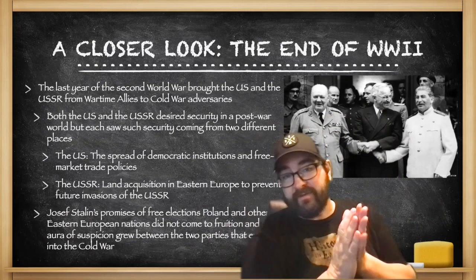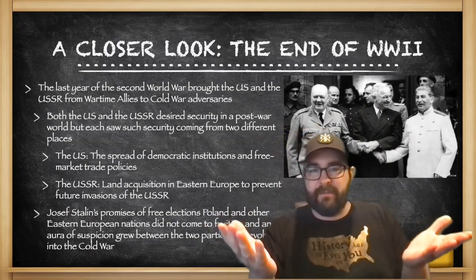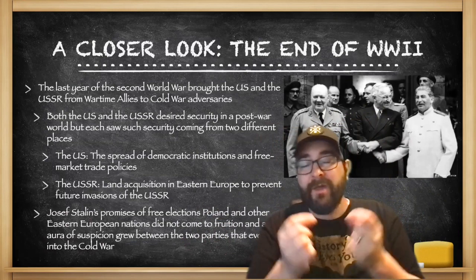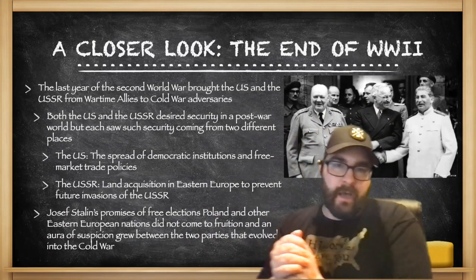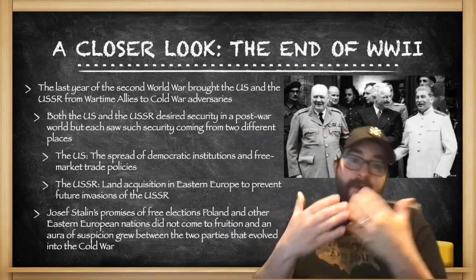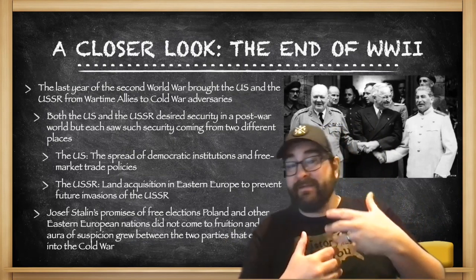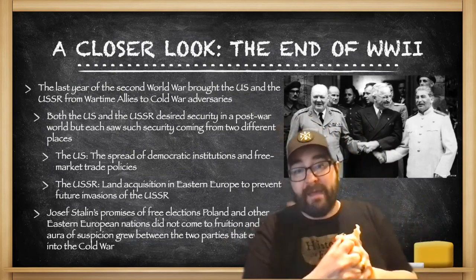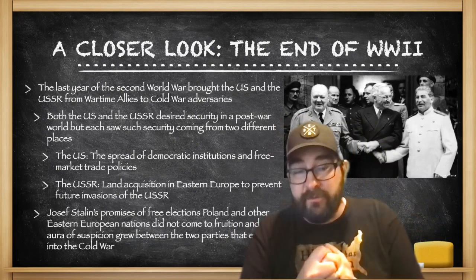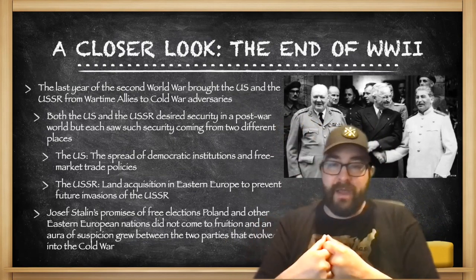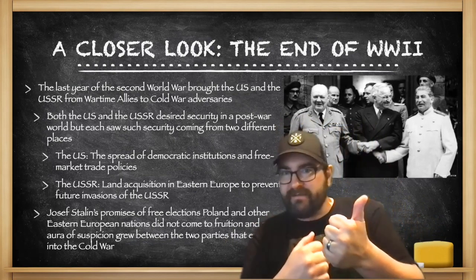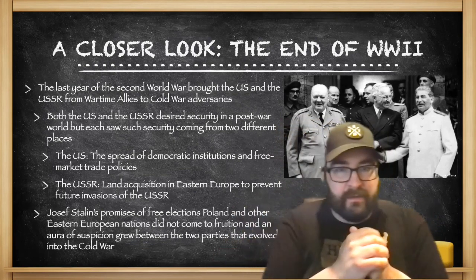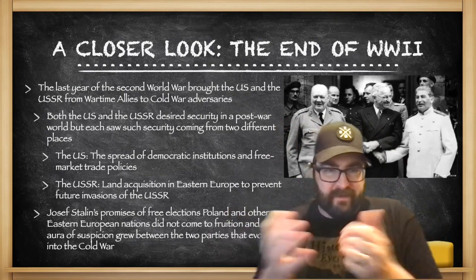Both the United States and the Soviet Union are looking for the exact same thing — they want security in a post-war world. But each of them see security coming from two different places. The United States sees security around the world coming from the spread of democratic institutions and free market trade policies. The more democratic states are and the more states will trade with each other, the less likelihood of widespread conflict.